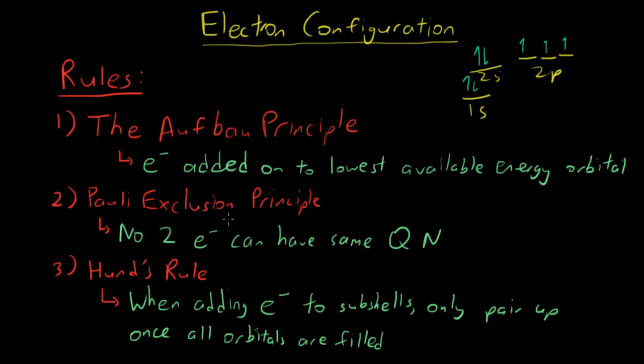The Pauli exclusion principle just says that no two electrons can have the same quantum numbers. So what this says is that we can basically fit two electrons in each orbital because they have different spins.